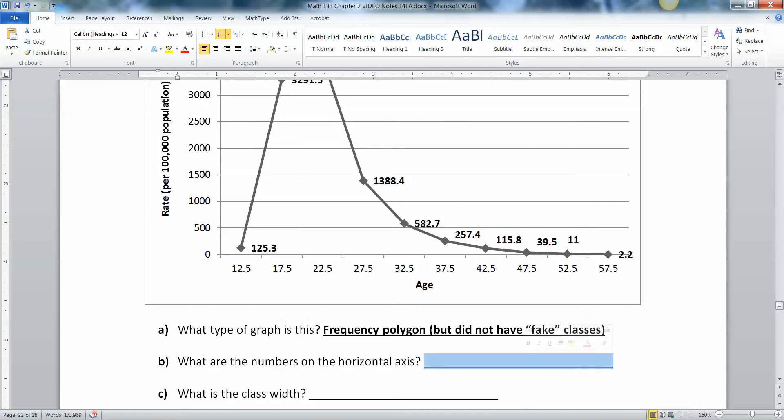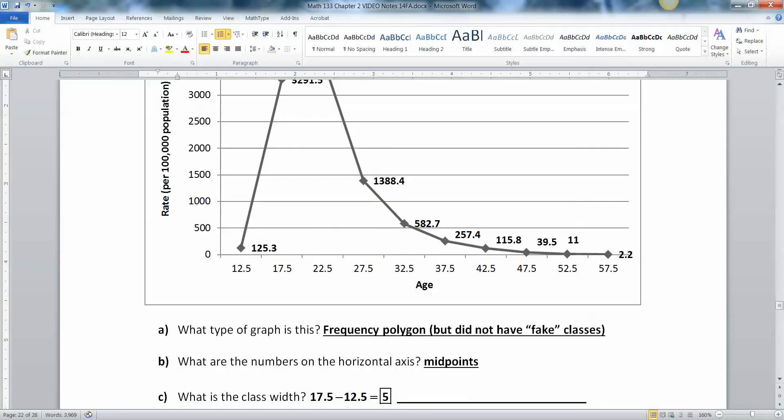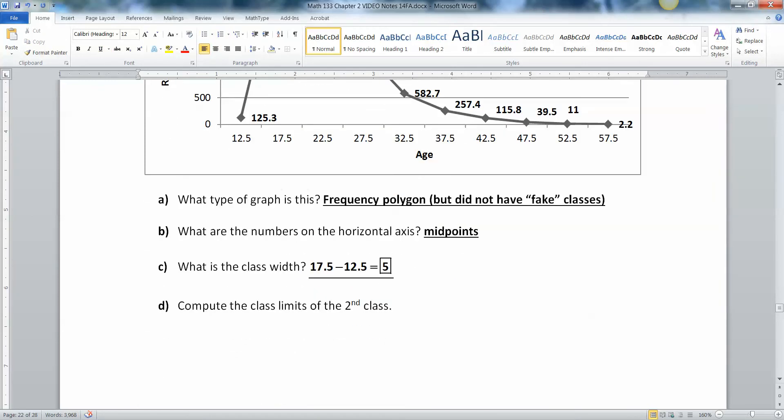All right. Now the numbers on the horizontal axis are the midpoints, right? Because if it's a polygon, those are going to be midpoints. The class width you can tell is five. And you can see that because you can subtract, 17.5 take away 12.5 is five. And it's consistent all the way along the graph. I mean, a true frequency polygon will be, everything will be the same width. So if you have 12 to 17, that's five. 17 to 22, that's five. 22 to 27, that's five. And so on.